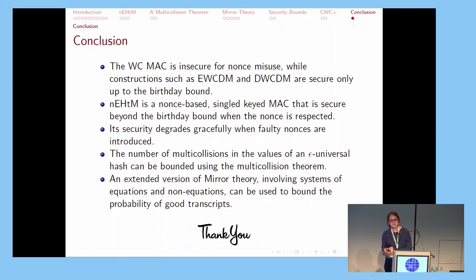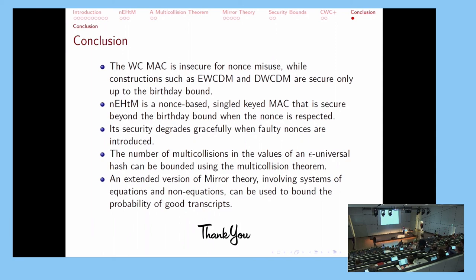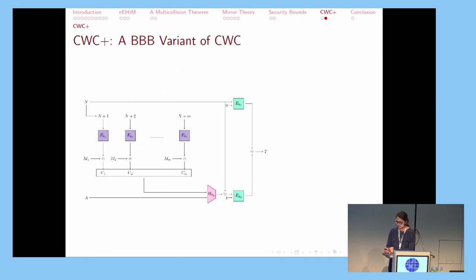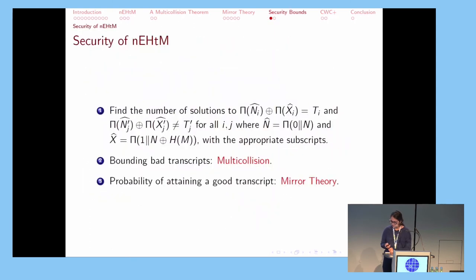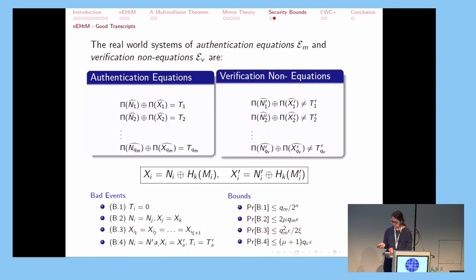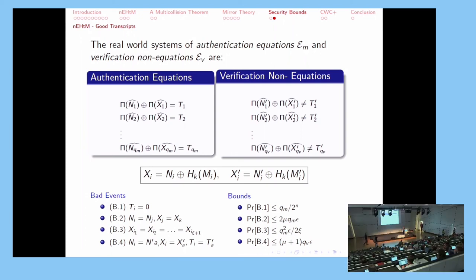Any more questions? Maybe I missed it, but can you say something about the tightness of the bound? Is it clear that they are tight? We had 2^(n/3), so... I'm not sure at the moment. Let me just check. I guess just if you know of a matching attack, so if you don't know... We have a clear birthday bound attack when the nonce is misused. And I'm not so sure about the tightness right now. I would like to discuss offline. Any more questions? Okay, if not, let's thank the speaker again.